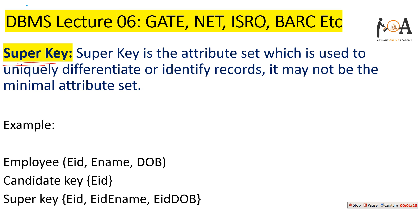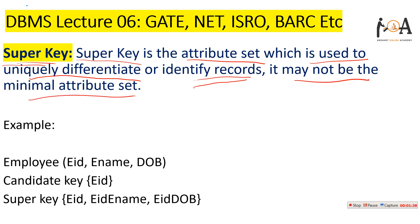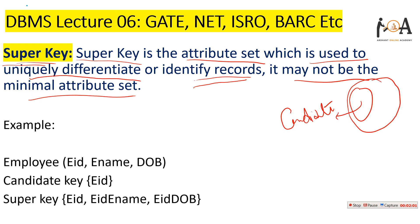A super key is an attribute set which is used to uniquely differentiate or identify records, and it may not be a minimal attribute set. Previously we discussed that a candidate key is the minimal set of attributes which identifies records. A super key, however, is the collection of all such sets which can identify records uniquely — but it may not be minimal.